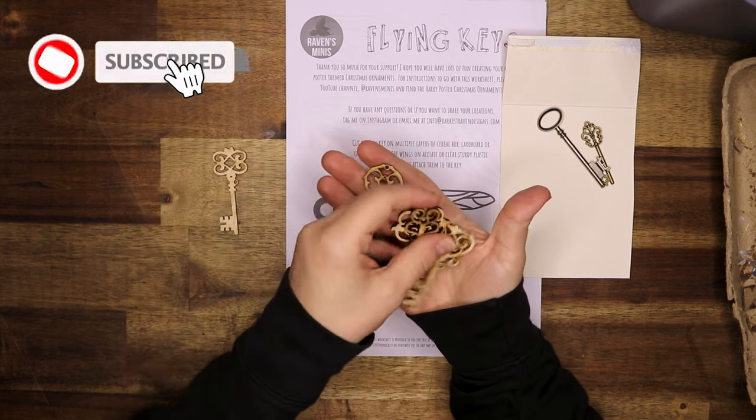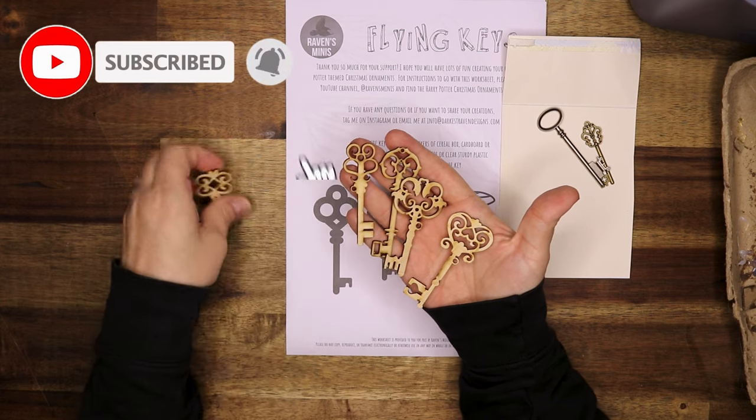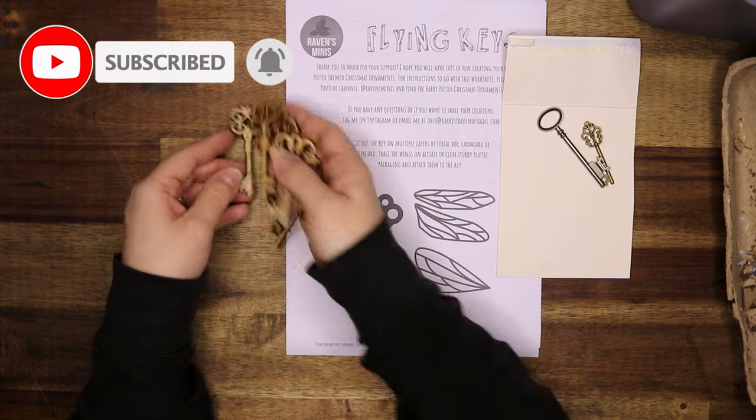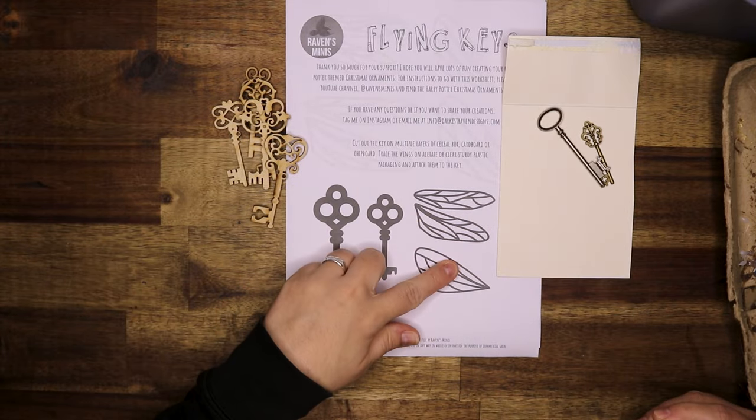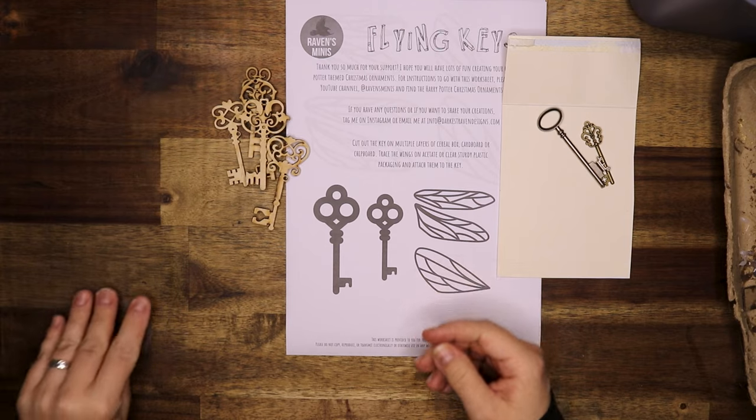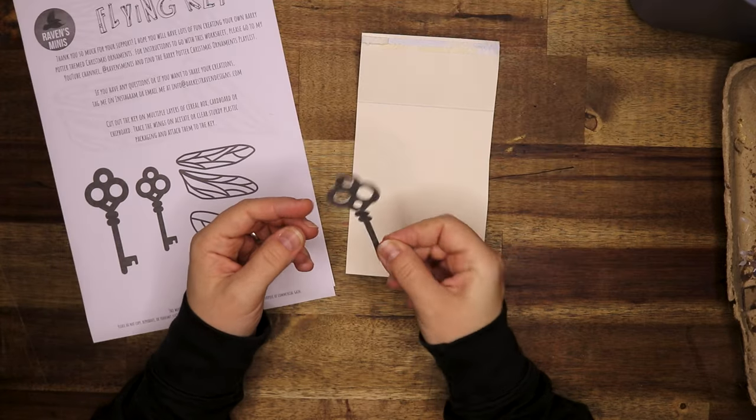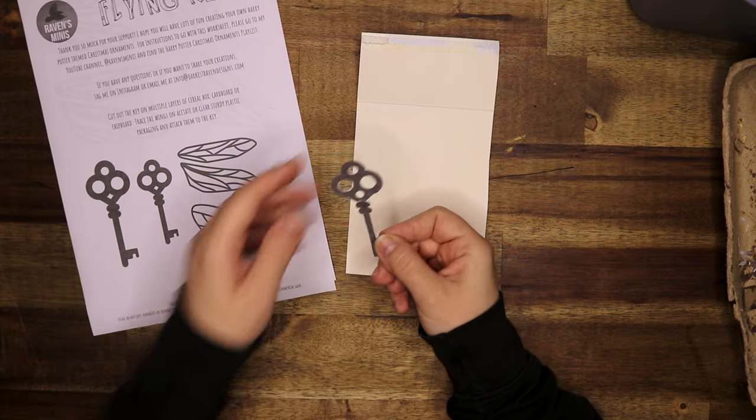You will also need a sheet of acetate. You can also find this in your recycling bin, probably from plastic packaging. The acetate is going to be used for the wings.